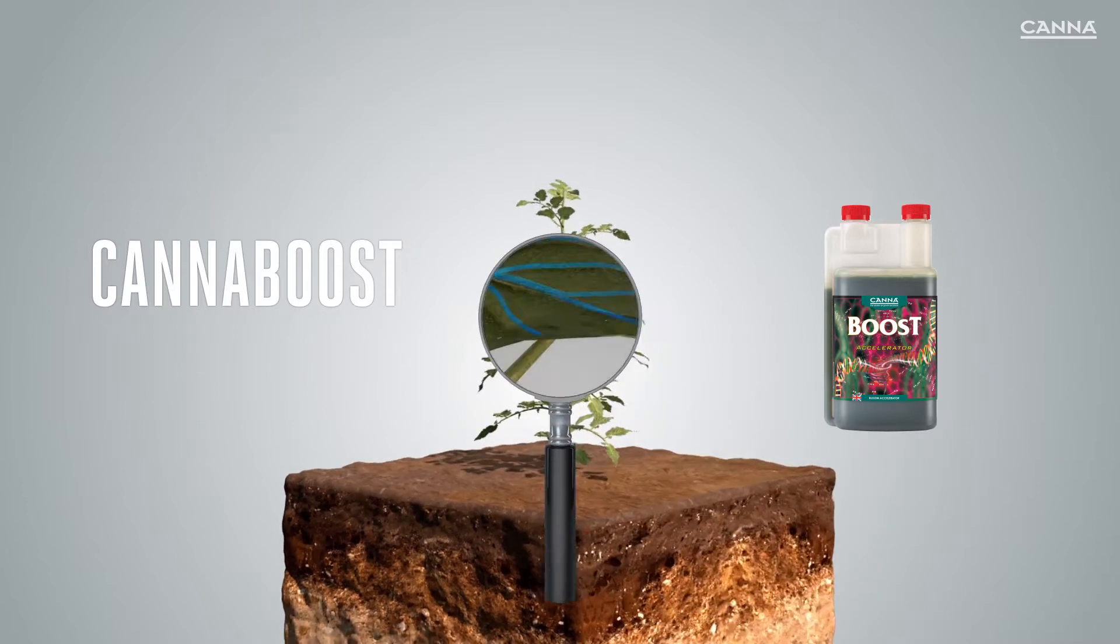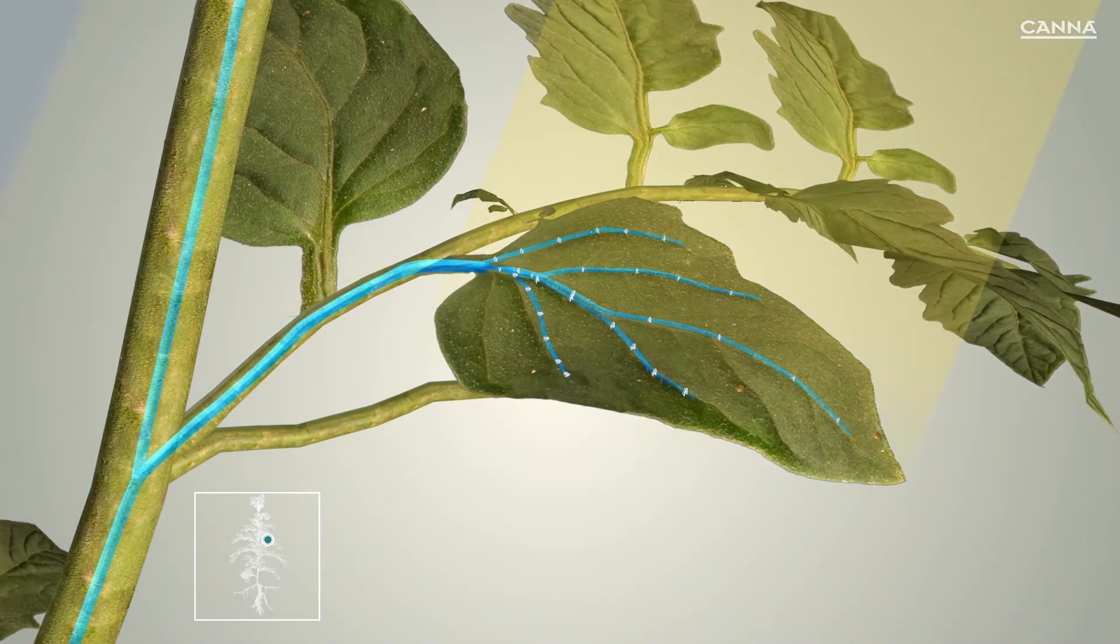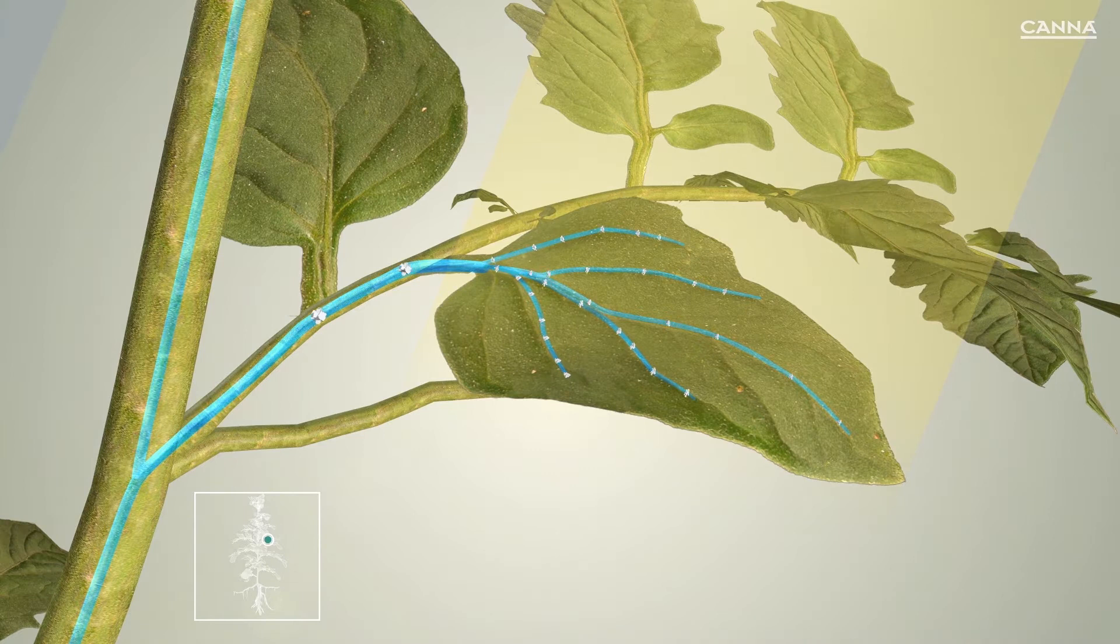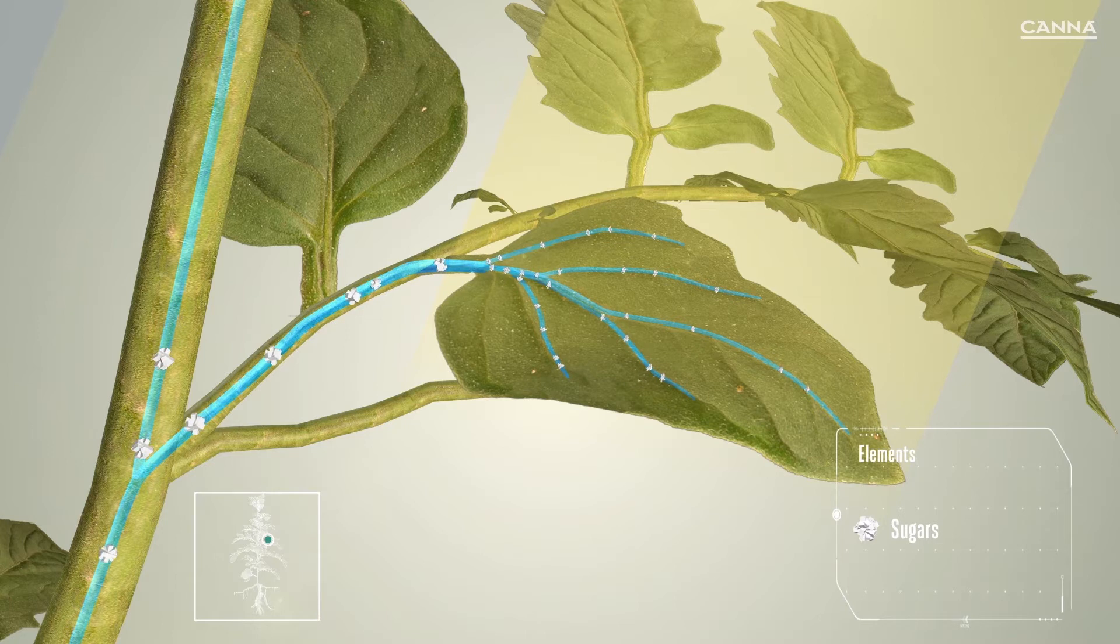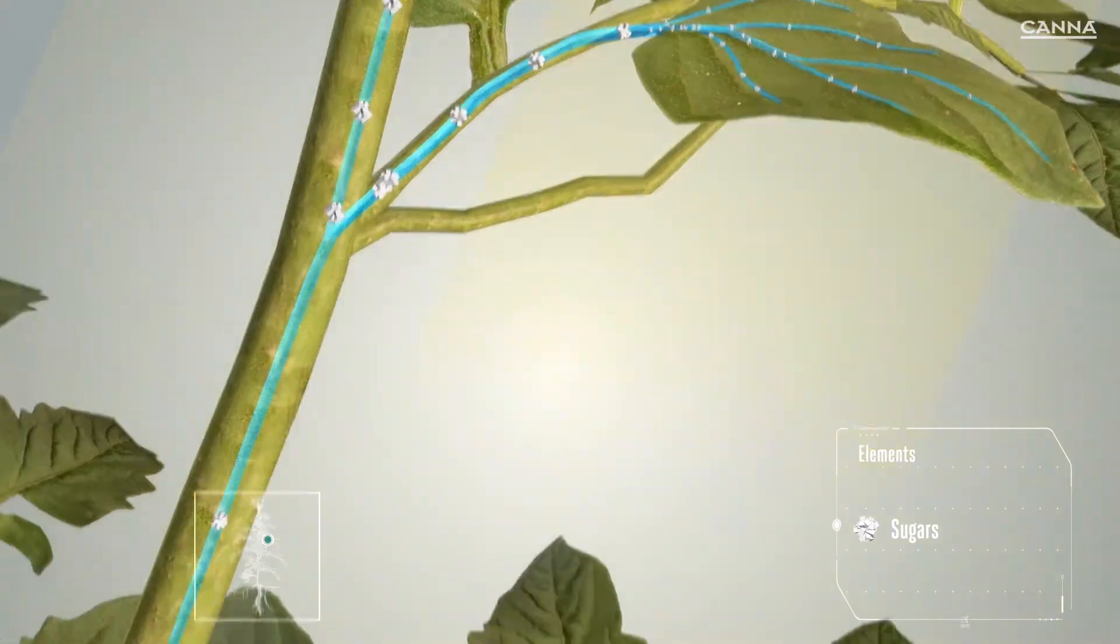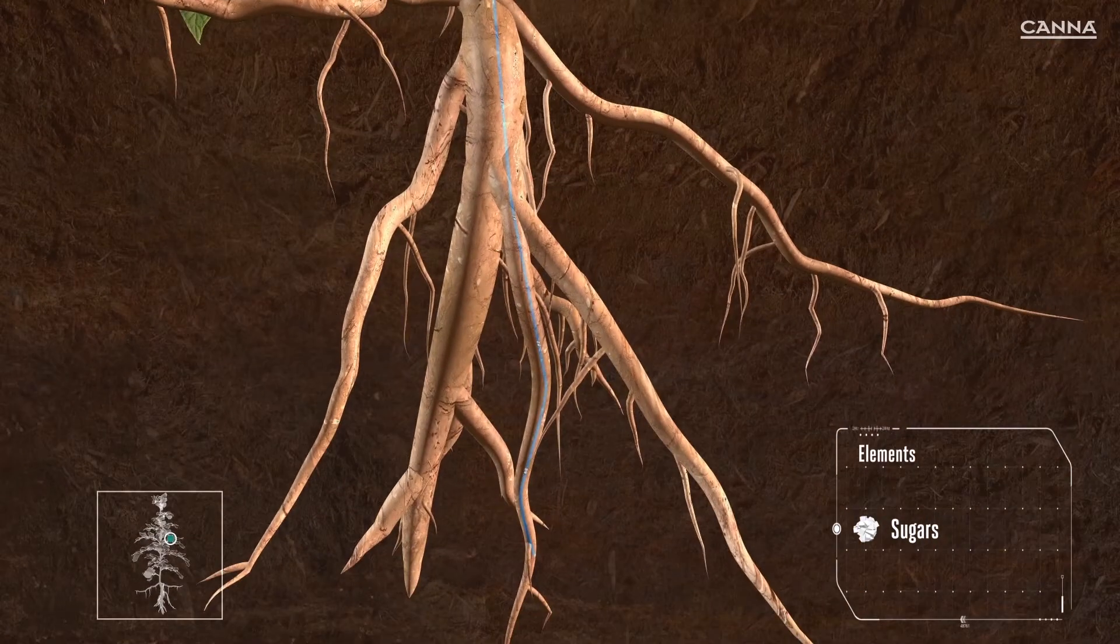The energy that is captured through photosynthesis is transported throughout the plants, usually as complex sugars or carbohydrates. From the leaves, most of the sugars move upwards and are used for growth and later for the production of flowers or fruits. Some sugars are also transported downwards towards the root system.